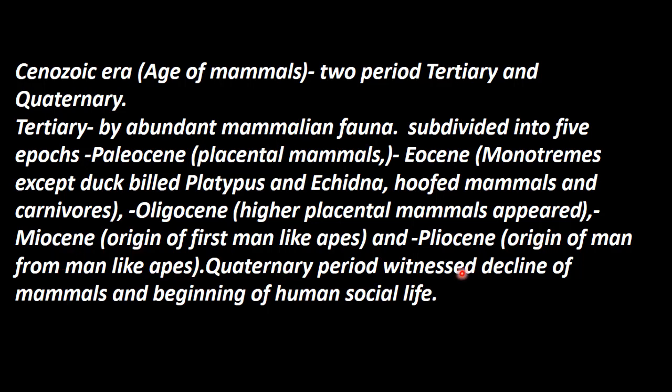In the Quaternary period, there was a witnessed decline of the mammals — their numbers decreased. This period also marked the beginning of human social life in the Quaternary period, around six to seven million years ago, as we have seen already.